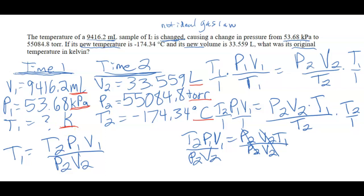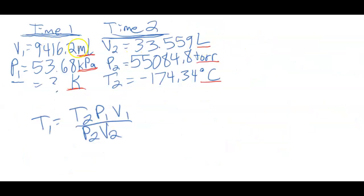So this is going to require a lot of different conversions here. So to make this a little bit easier on myself, I'm going to convert all of my units to the same as what I have at T1, so at time one. Now, you can convert to either unit. So you can do milliliters or liters. You could do kilopascals or torr. But for the temperature, you always have to do Kelvin.